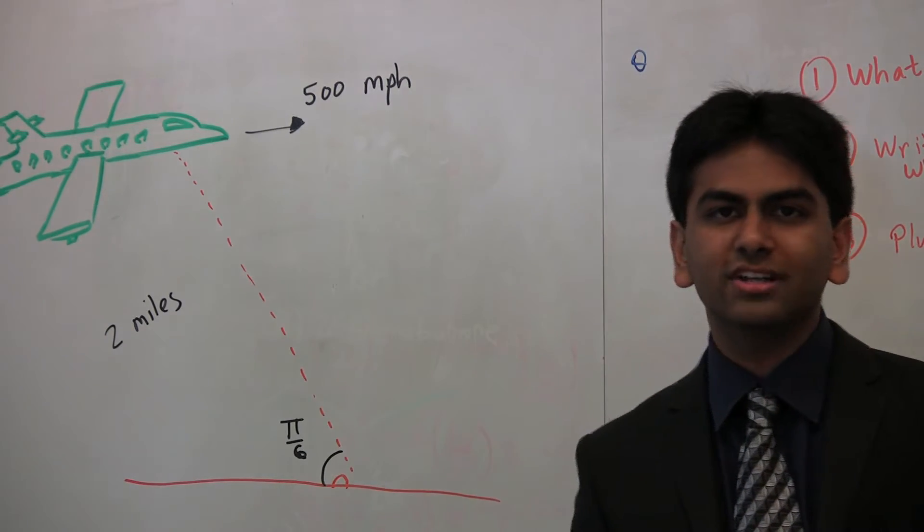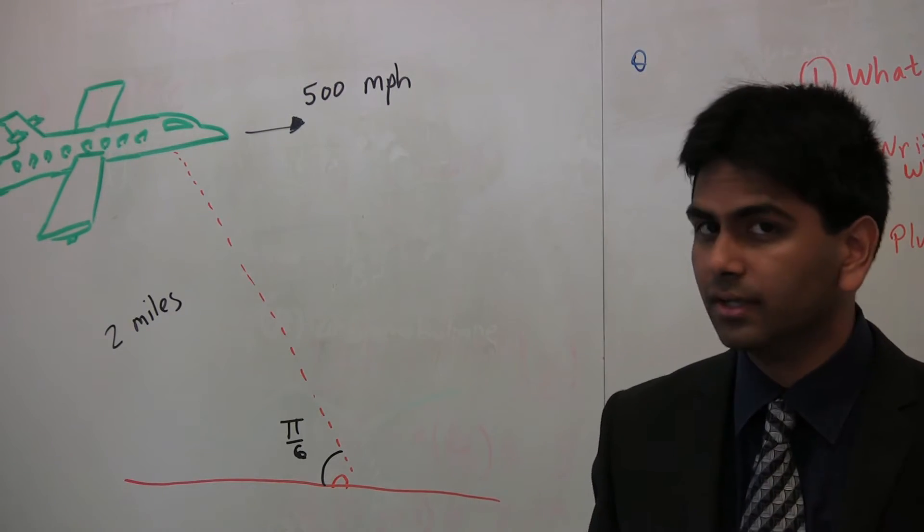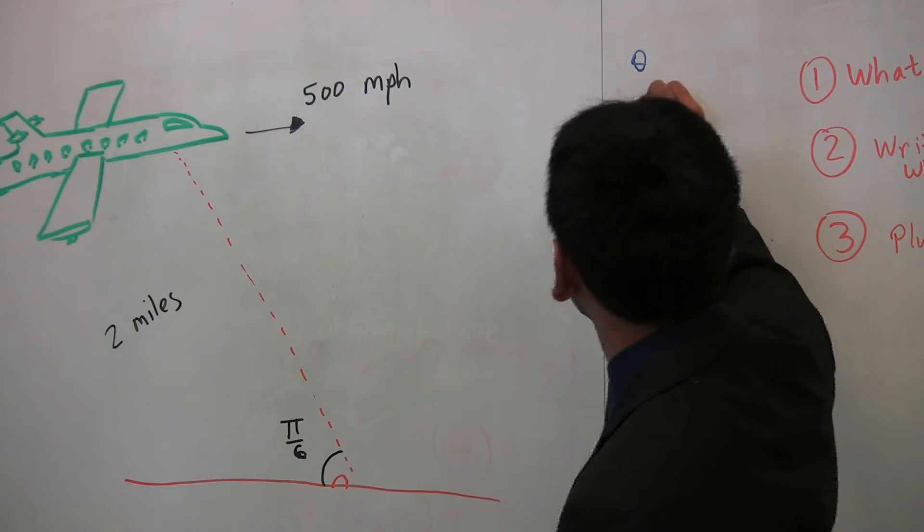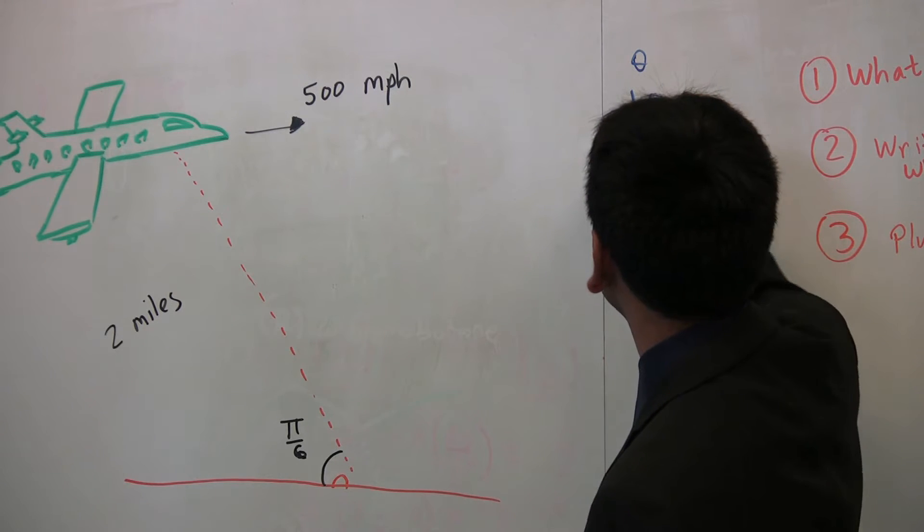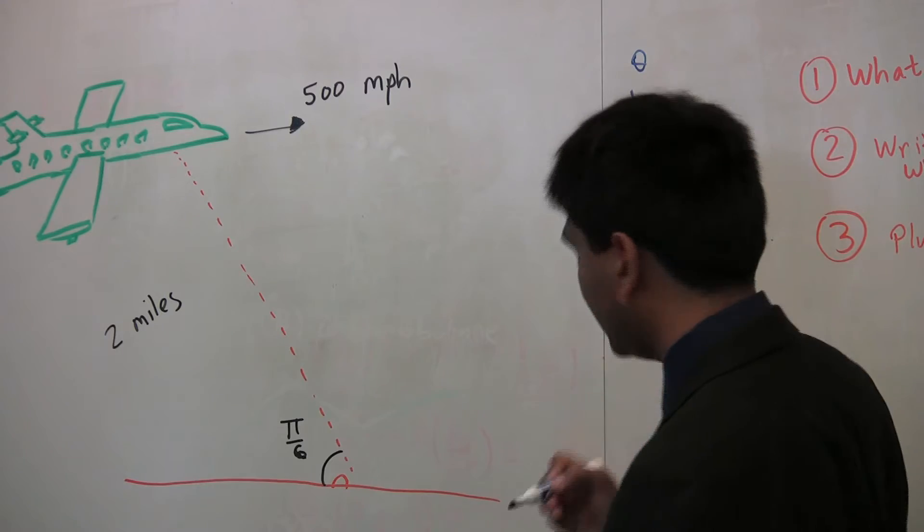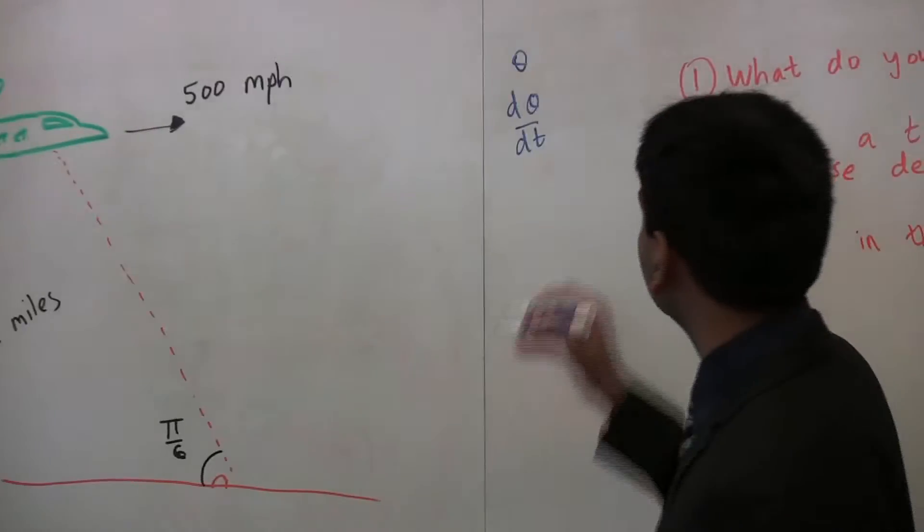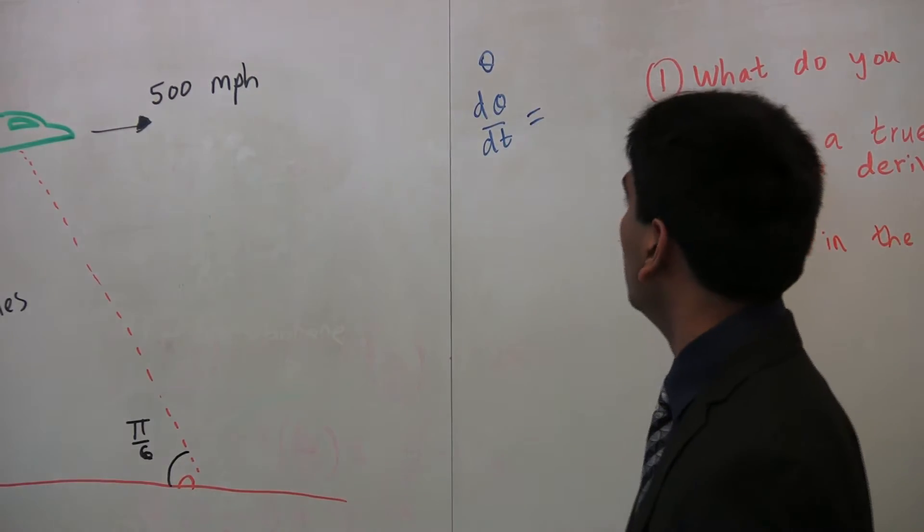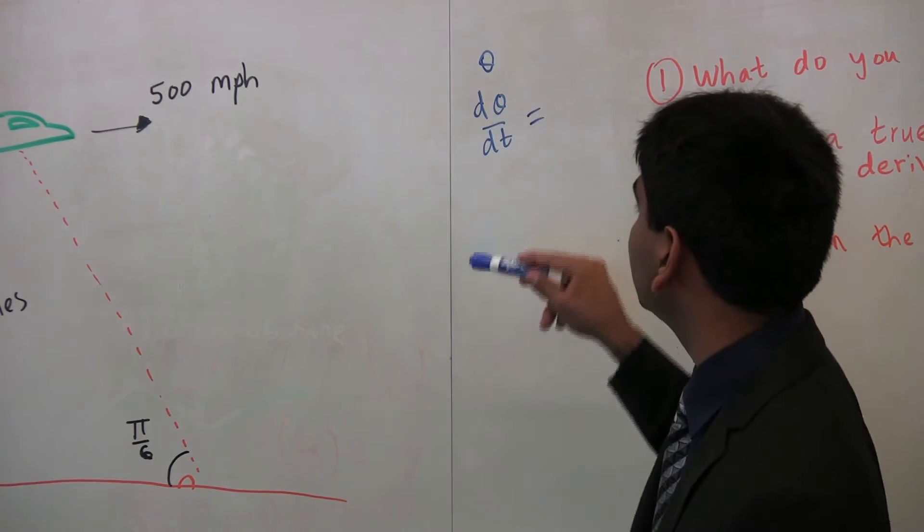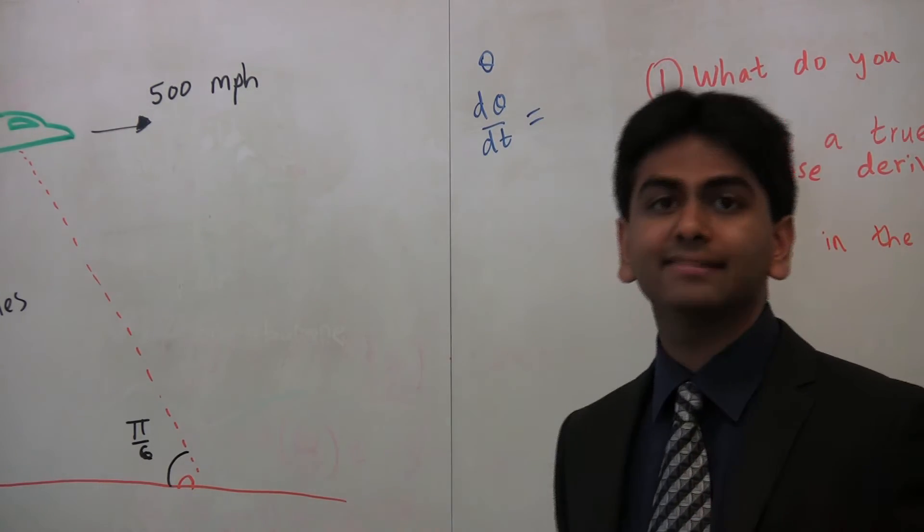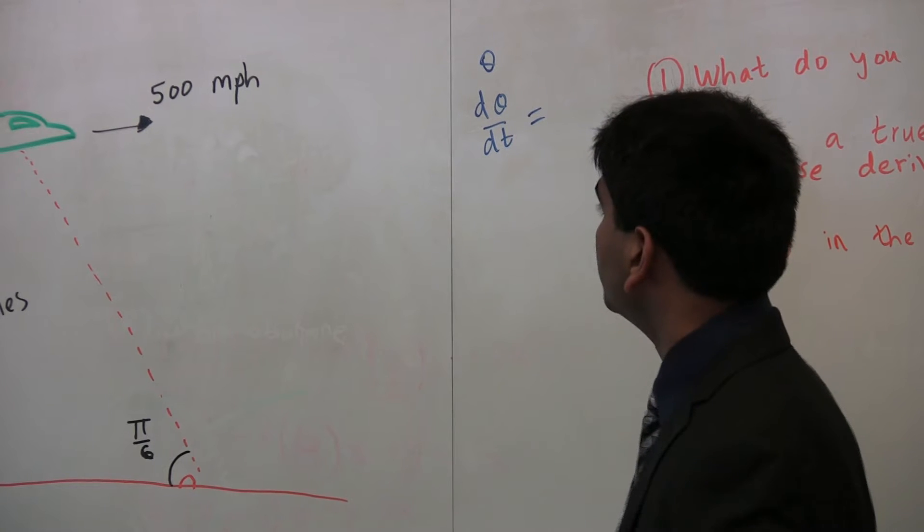So, whenever the question is how fast anything's changing, then the variable is actually the derivative of that. The derivative is dθ/dt. So, now actually this is what we want to solve for. Our eventual answer will be something that's dθ/dt equals because that's how fast the angle is changing.